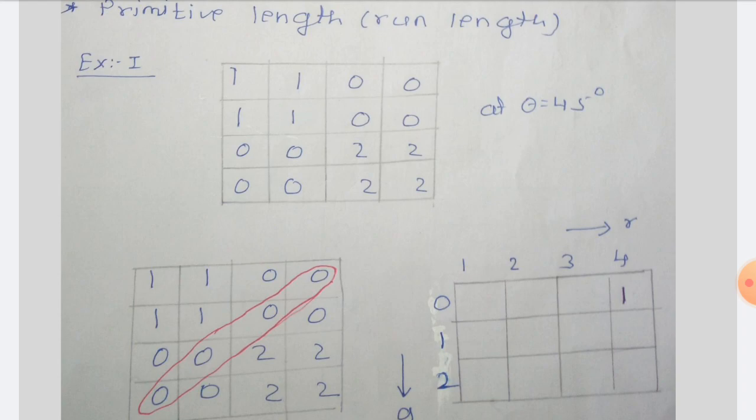First, we determine the size of the primitive length matrix. We check how many gray levels are present in the given image — there are 3 gray levels: 0, 1, and 2. The number of gray levels gives the number of rows. As shown on the right side of the image, rows are 0, 1, and 2. The size of the image is 4×4, so the maximum number of columns we take is 4, giving columns 1, 2, 3, and 4. Rows are represented by small 'a' and columns by small 'r'.